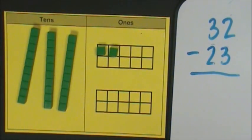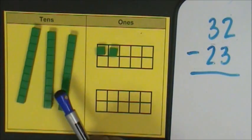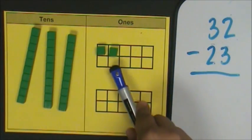Thirty-two is composed of three tens: one, two, three, and two ones: one, two.